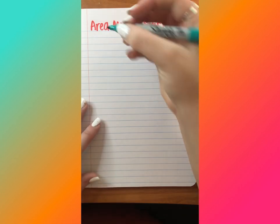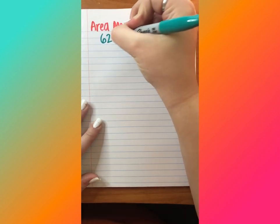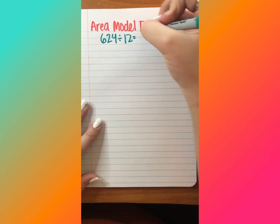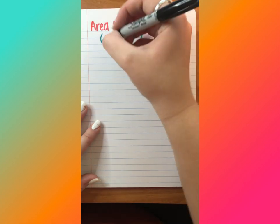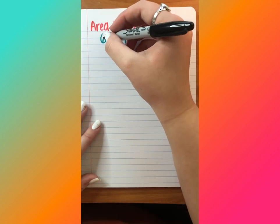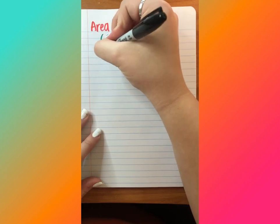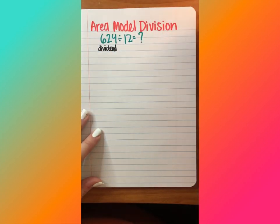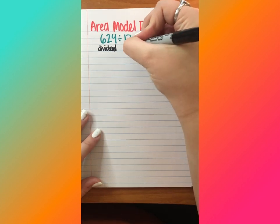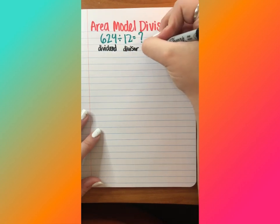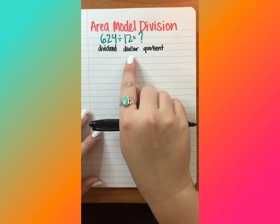Whenever we are solving a math problem, let's say that we're gonna solve 624 divided by 12 equals a number, it's important first that we understand what each number is referred to. So the number that's being split into a group is my dividend. So I want to make sure I label that so that we all are speaking the same language. My divisor is how many groups it's being split into. And then my quotient is the result of a division problem or the answer. So dividend, divisor, and quotient.